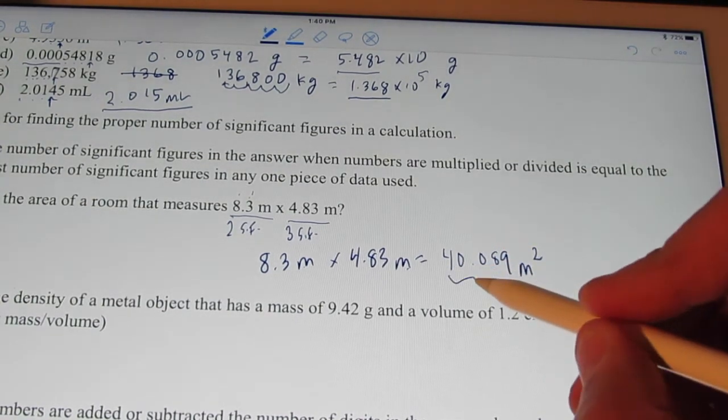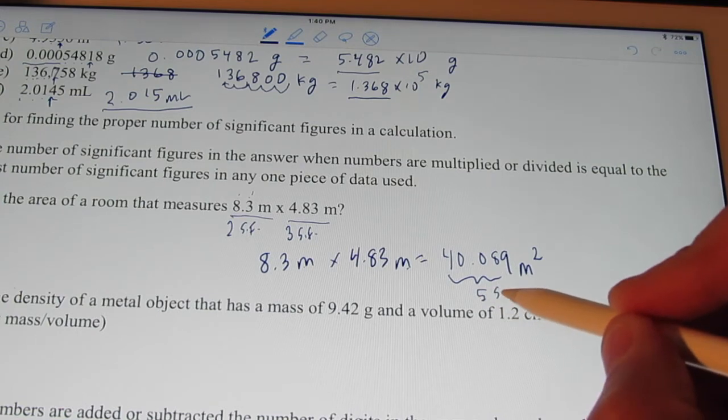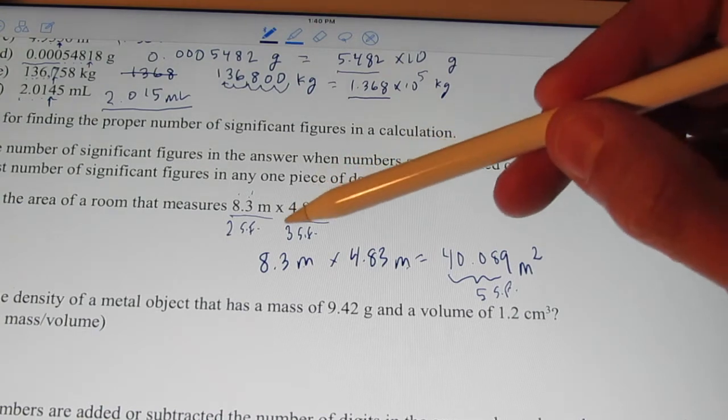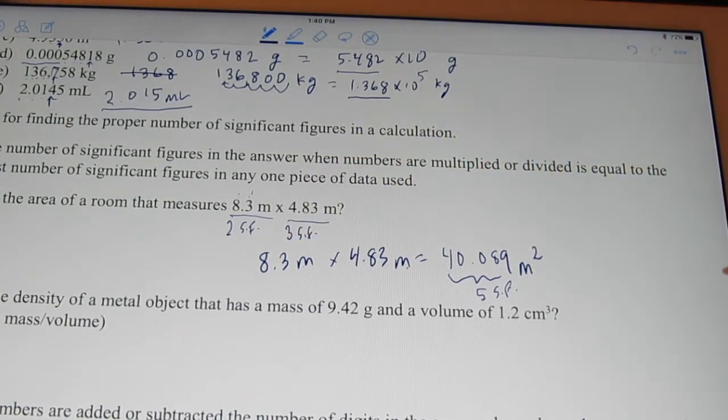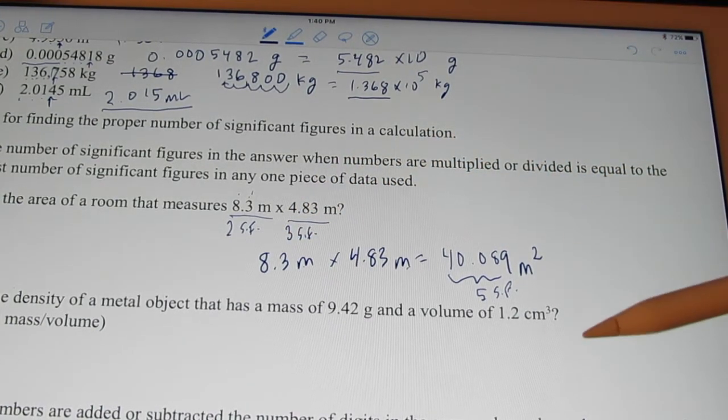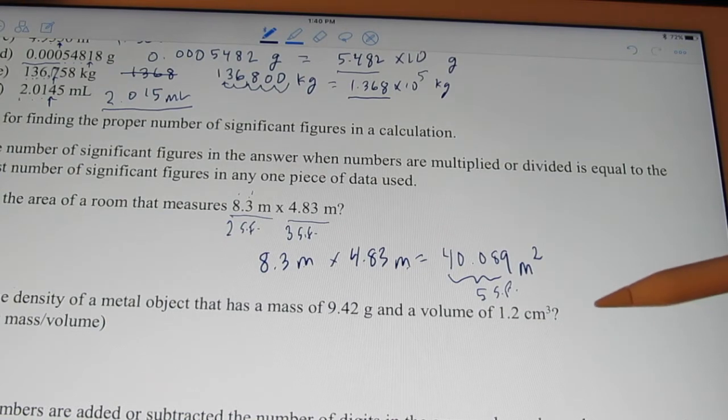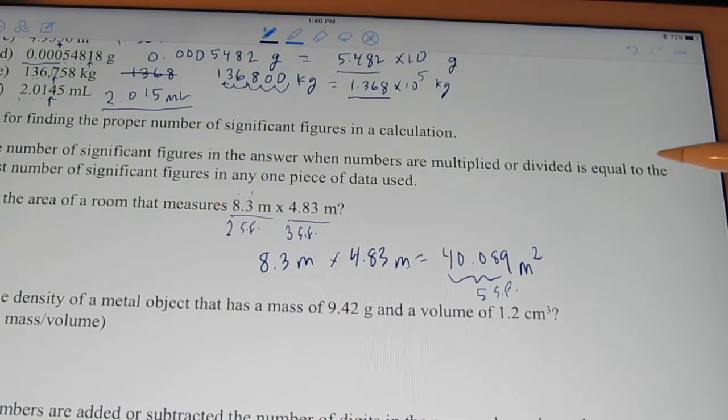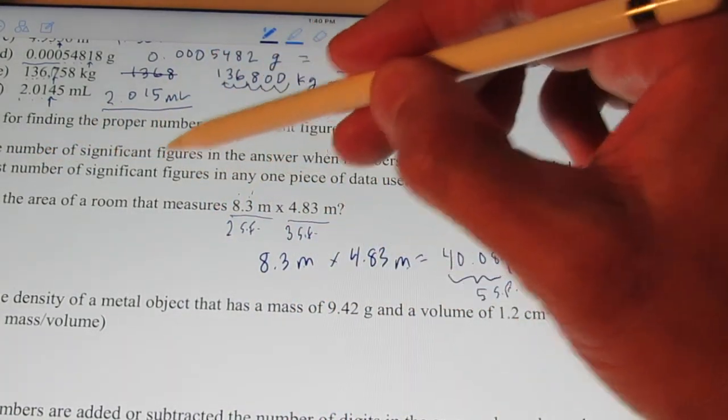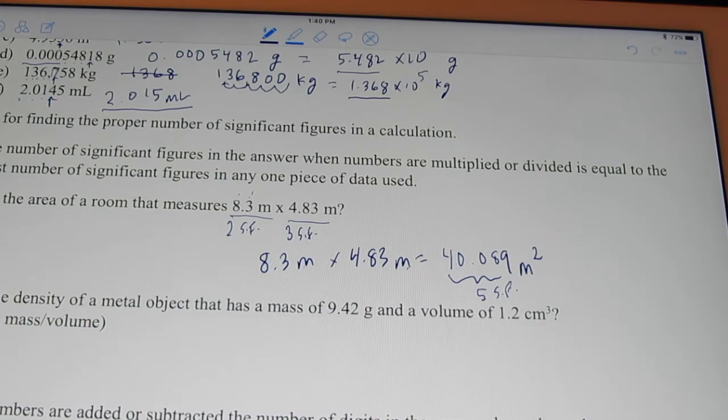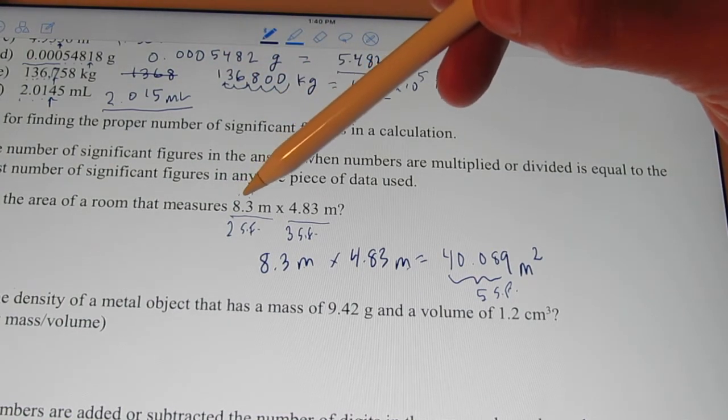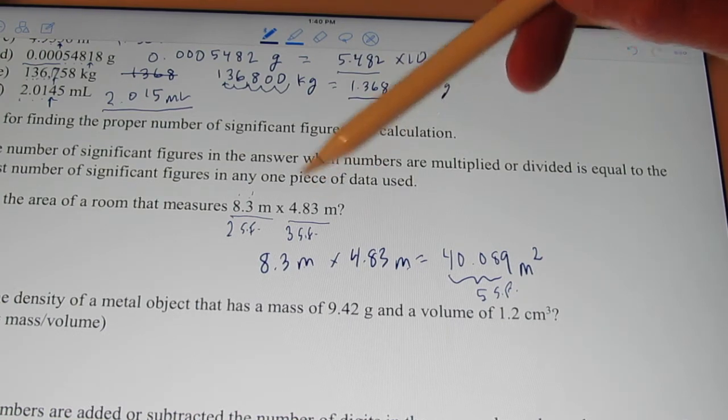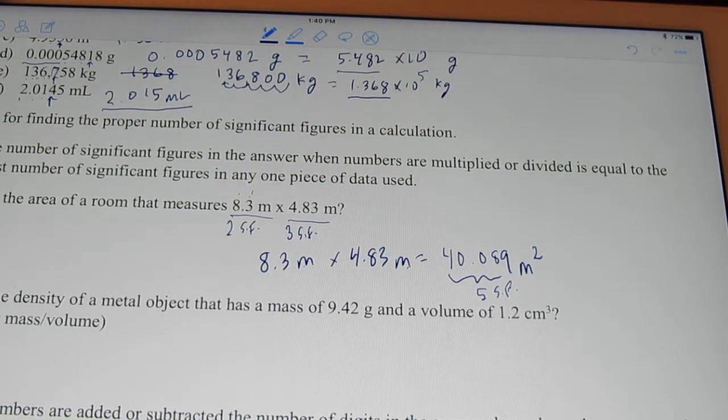Now, doesn't my answer end up having five significant figures? Can my answer be more accurate than the data that I used to arrive at that answer? No. The answer is obviously no. It can't be. So, since we're multiplying, the rule we'll use is the number of sig figs in my answer is equal to the smallest number of sig figs in any one piece of data used. So I have two significant figures in this piece of data. Three significant figures in this piece of data. I need to go with two significant figures in my answer.